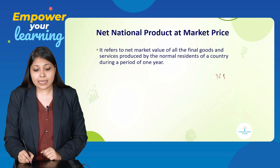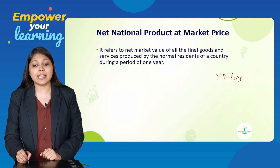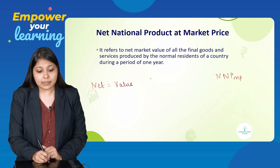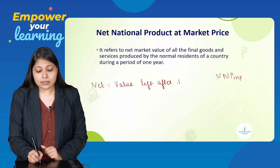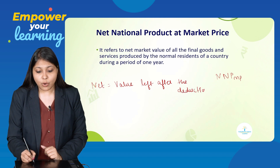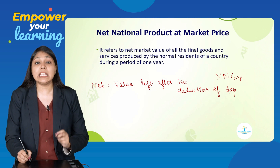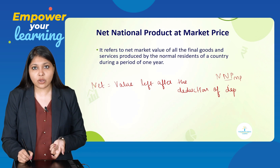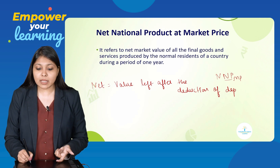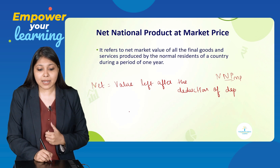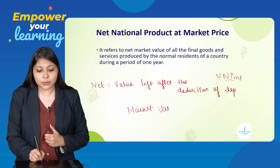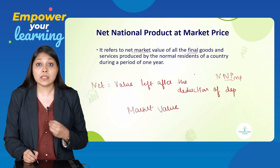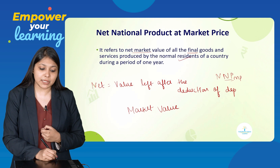The third national aggregate is NNP at MP — Net National Product at Market Price. Net means the value remaining after the deduction of depreciation. National means goods produced by normal residents. MP means market price, so we write market value. It refers to the net market value of all final goods and services produced by normal residents of a country during a period of one year.